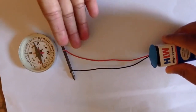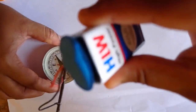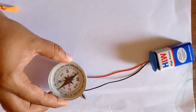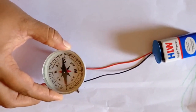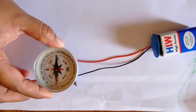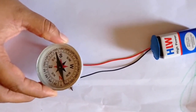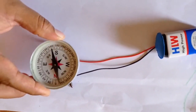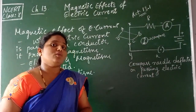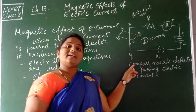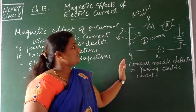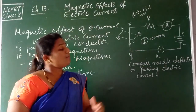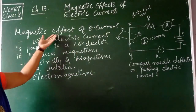The nail is now a current-carrying conductor. When we bring the compass near to the nail, the compass needle starts deflecting. This makes it clear that the current-carrying conductor produces magnetism, and because of that, the compass needle deflects. After observing the video, we conclude that when electricity flows in the circuit, the compass needle deflects due to the generation of magnetism — the flow of electric current produces magnetism.